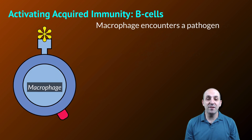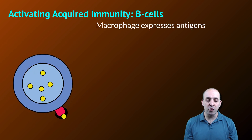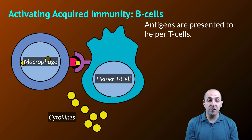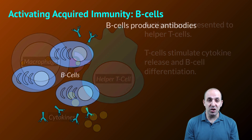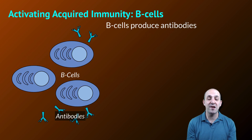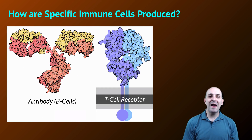B cells work a little differently, but it still starts the same way. The macrophage encounters a pathogen, engulfs it, and starts to express antigens on its surface. Those antigens are then presented to helper T cells, which produce cytokines and stimulate B cell differentiation. Once the correct B cells are produced, those cells produce antibodies and release them into the circulatory system where they can carry out their effects in controlling the infection.